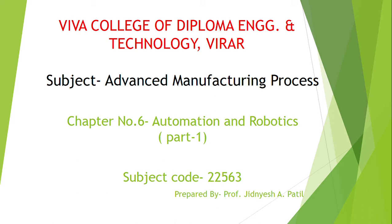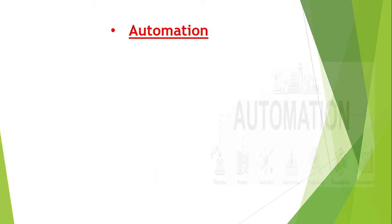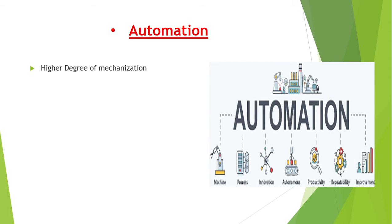Basically, automation means the higher degree of mechanization. Mechanization means that operations are carried out by machines instead of being performed by humans, but the process is monitored and controlled by humans only. Generally, the movement of the tool and workpiece is automatic, the tool cycle is automatic, but operations like loading, unloading, clamping, and checking workpiece dimensions are done manually by the operator.